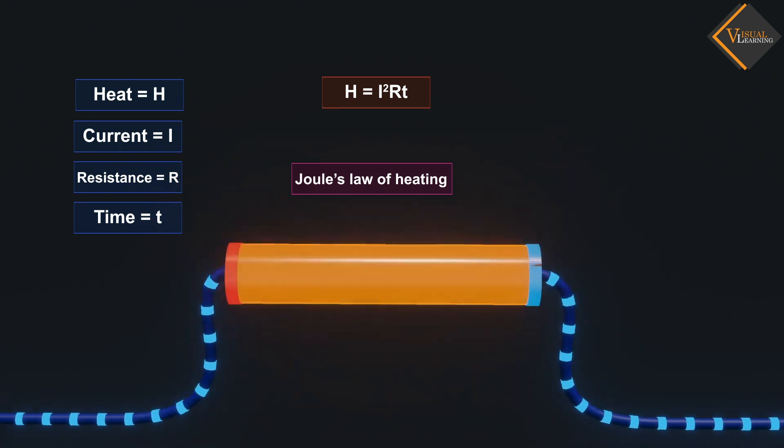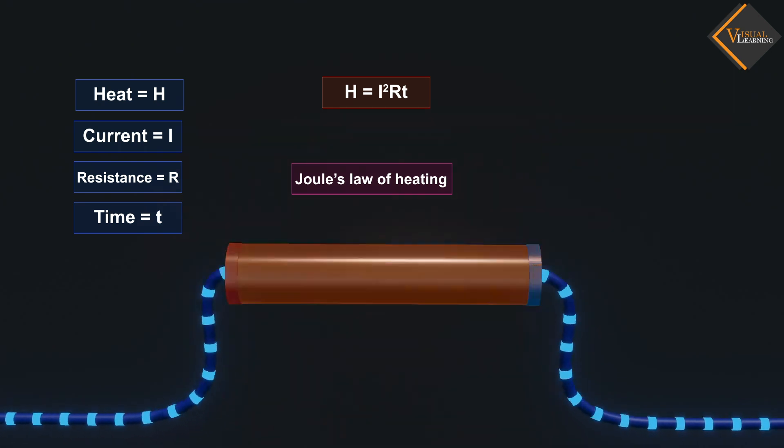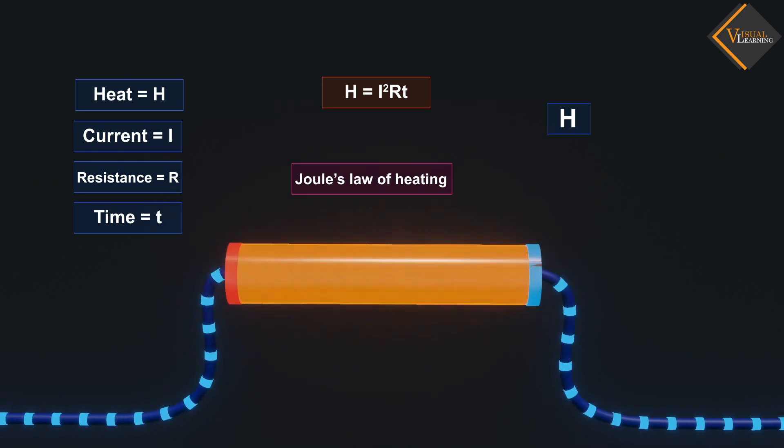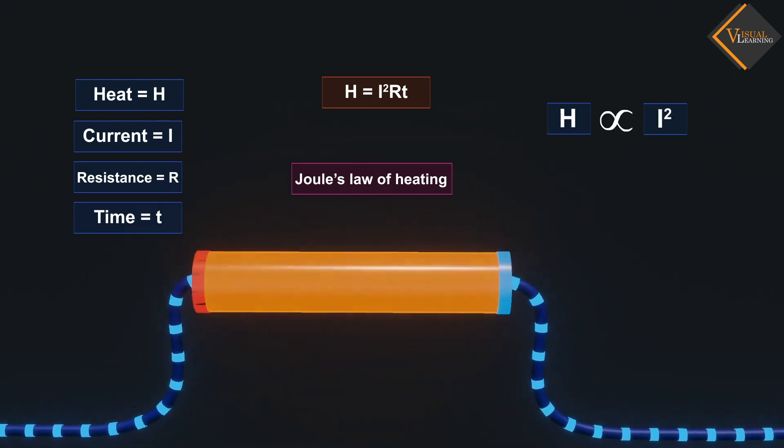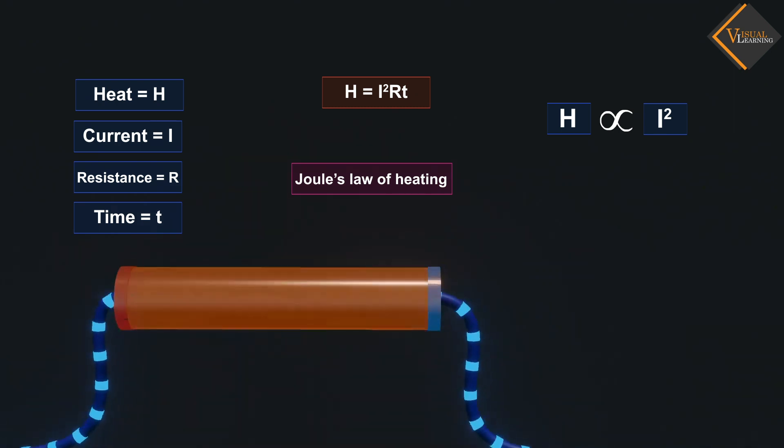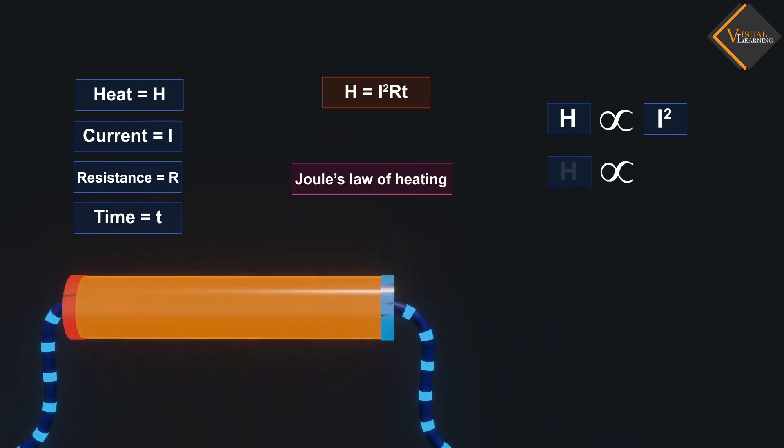The law implies that heat produced in a resistor is directly proportional to the square of current for a given resistance, directly proportional to resistance for a given current, and directly proportional to the time for which the current flows through the resistor.